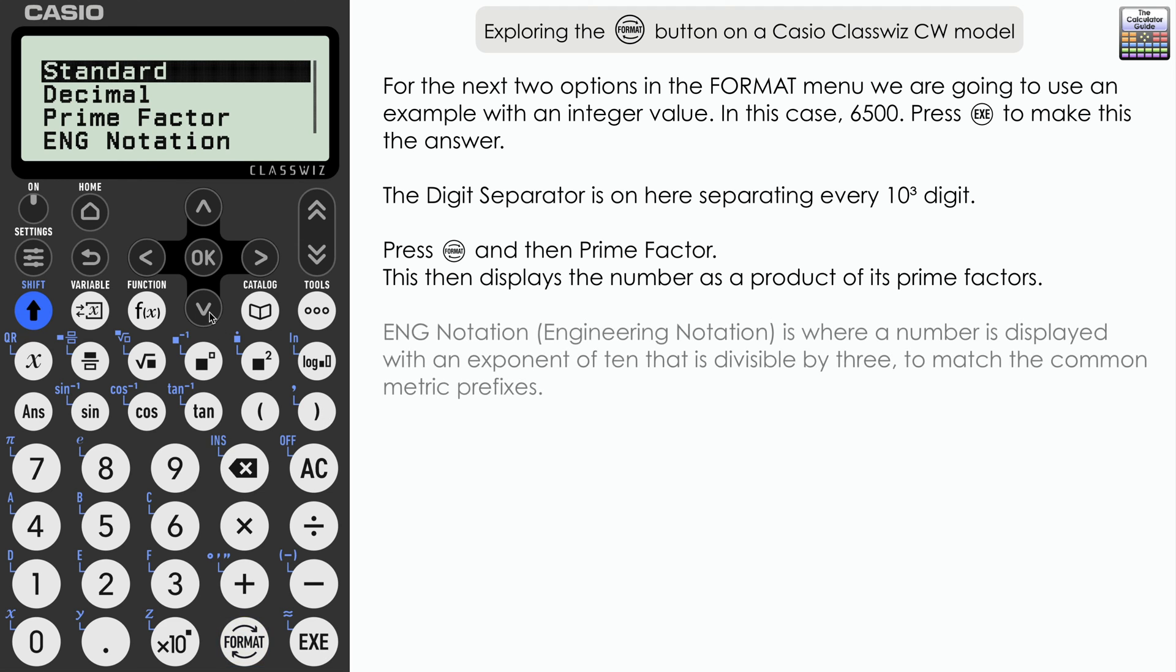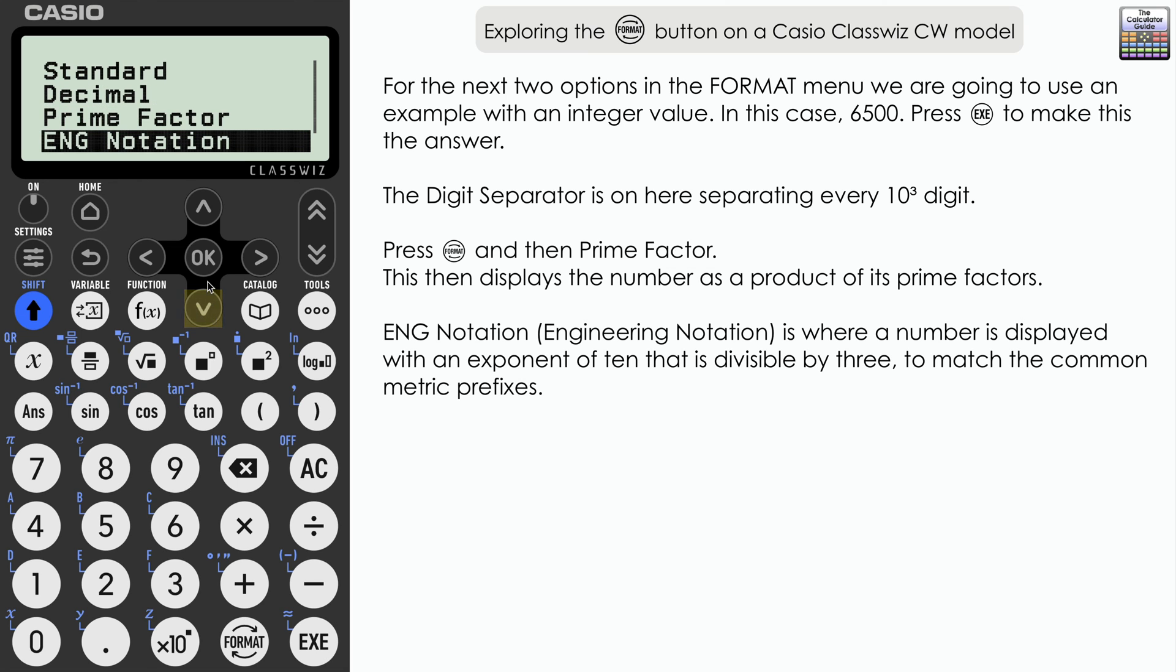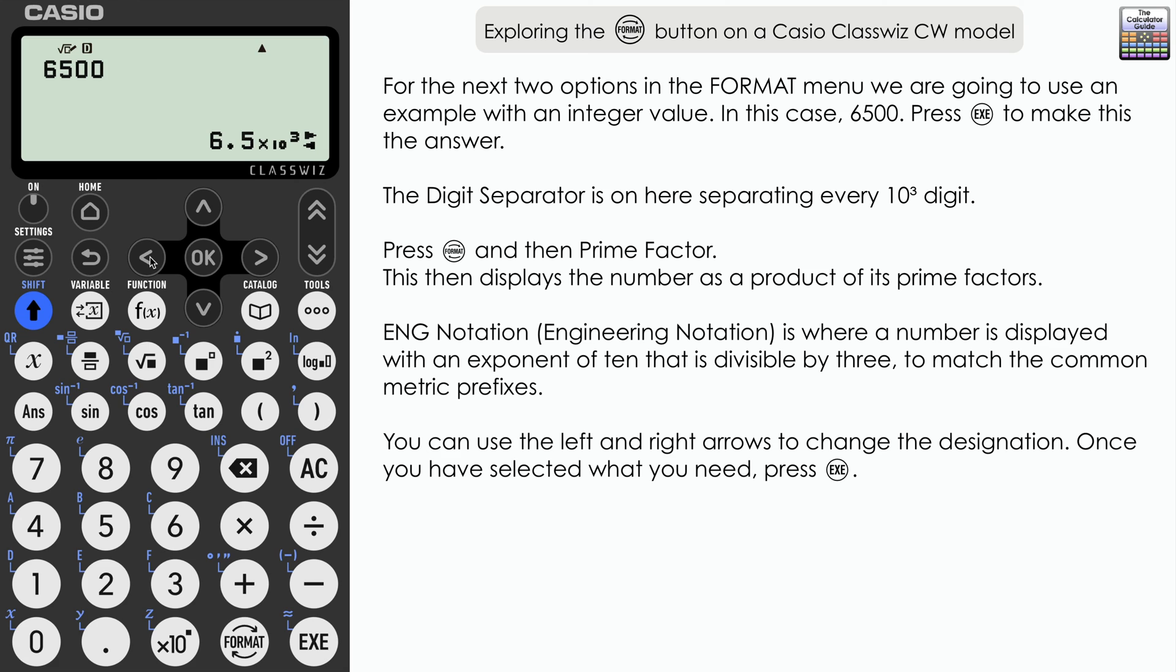And let's go to engineering notation to have a look at what this is all about. So this will display answers as powers of 10, but powers of 10 where the power is a multiple of three. So you can see initially, it's given that as 6.5 times 10 to the three. Now we've got arrows available here. So if we scroll left, we can see that displayed then as 0.0065 times 10 to the six. So we've gone up 10 to the power of three in terms of our increment there.